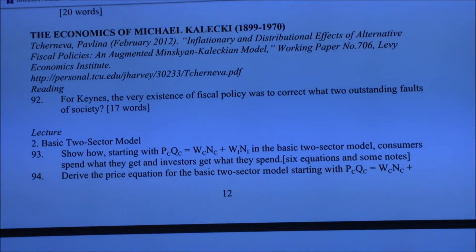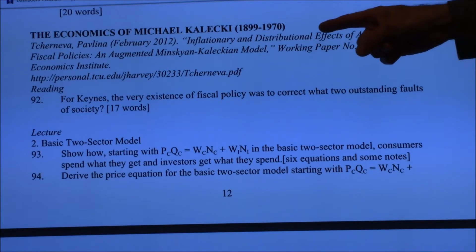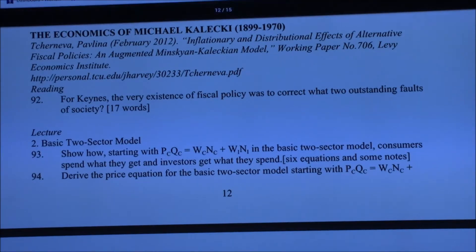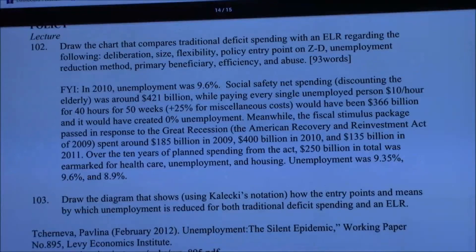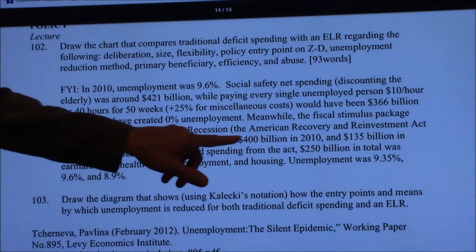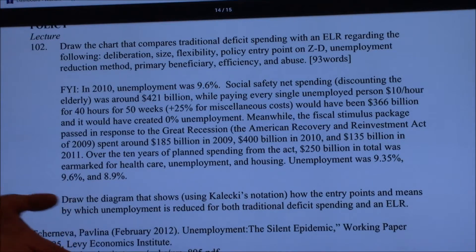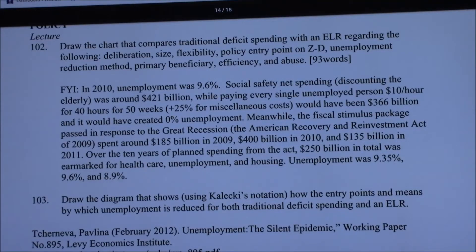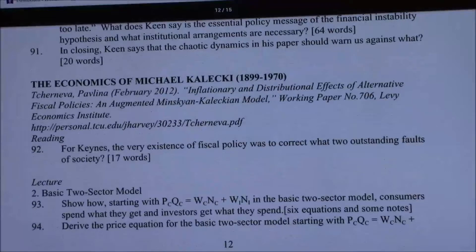This paper by Pavlina Tcherneva — you can click the link and read it — gives insight into how economists work. She was building this model, published in 2012, to understand how the deficit spending after the financial crisis — specifically the American Recovery and Reinvestment Act of 2009 — was actually helping people who directly needed help. Even though she's a post-Keynesian, she went to Kalecki, not Keynes.